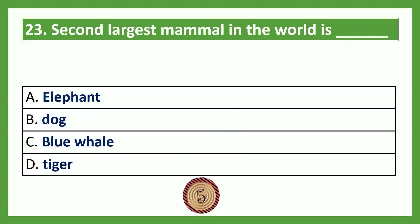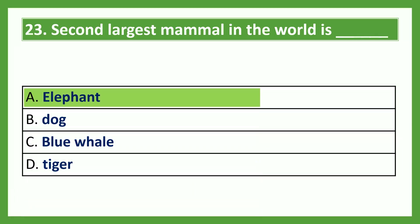The second largest mammal in the world is — Option A: elephant; Option B: dog; Option C: blue whale; Option D: tiger. The answer is Option A, elephant. Elephant is the second largest mammal in the world. The first largest mammal in the world is the blue whale.